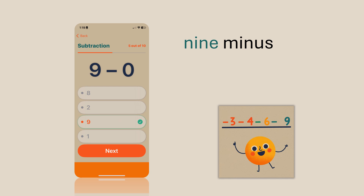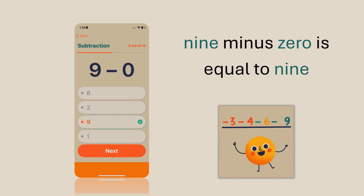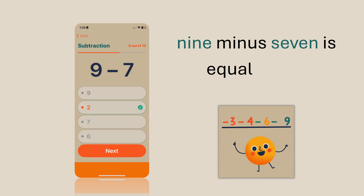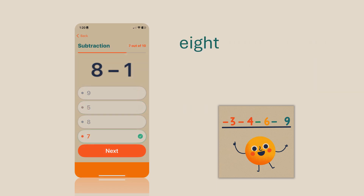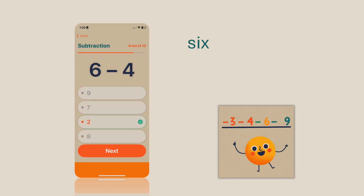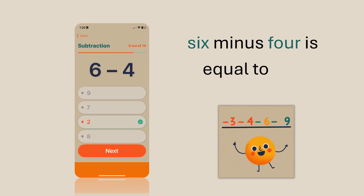9 minus 0 is equal to 9. 9 minus 7 is equal to 2. 8 minus 1 is equal to 7. 6 minus 4 is equal to 2.